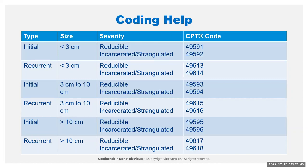All of these codes start 'repair of anterior abdominal hernias' — that is your epigastric, incisional, ventral, umbilical, Spigelian — any approach, initial. The 49591 is initial and less than three centimeters, reducible. The 49592 is also initial, less than three centimeters, incarcerated or strangulated. The 49593 is initial, three to ten centimeters, reducible. They did not change any of the inguinal hernia codes — those are still the same. The 49621 and 49622 are your peristomal hernia codes. Whether initial or recurrent, it does include the implantation of mesh or other similar item.